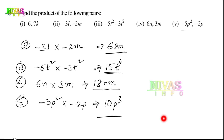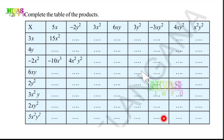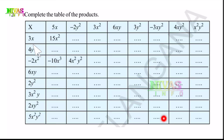After that, we will ask the second question. Here we have a table. Complete the table of products. For example, 3X into 5X gives 15X squared.